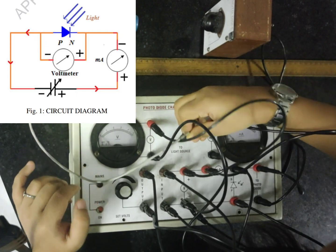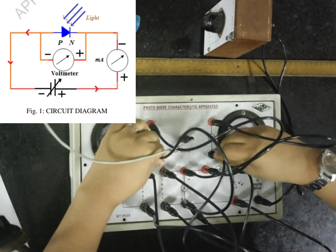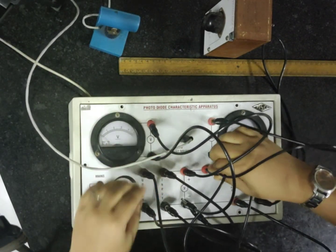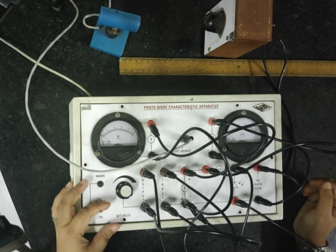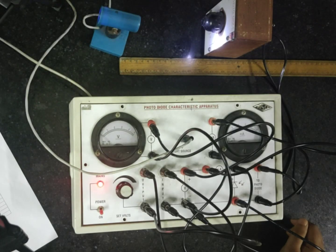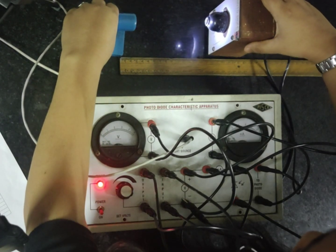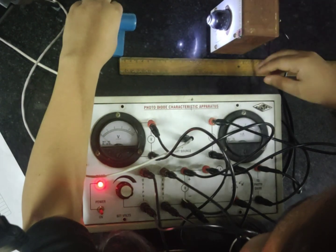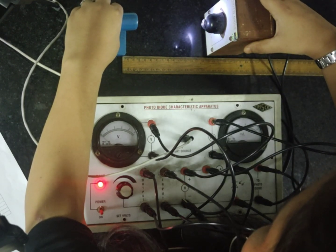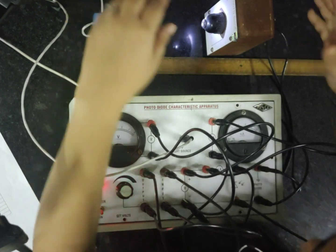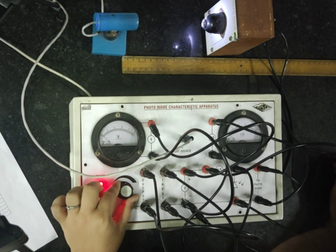Check that all connections are tight. To start taking readings, we adjust the light source and the photodiode at a fixed distance — first we fix the distance to be 15 centimeters using a scale.